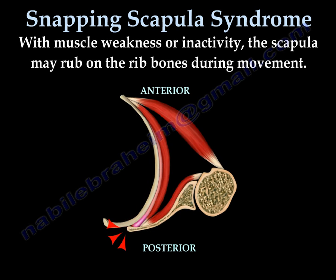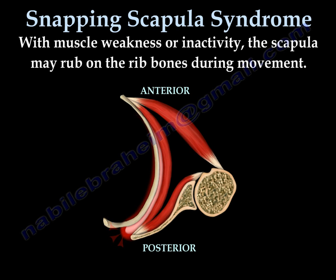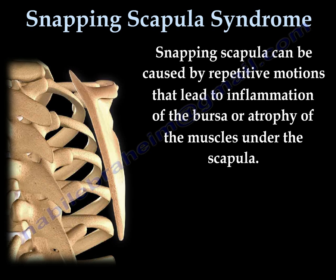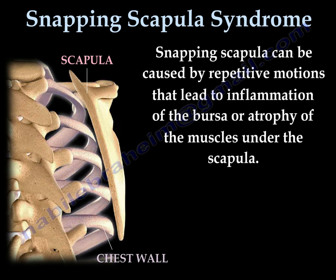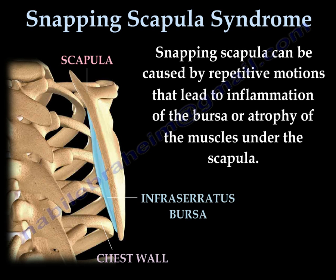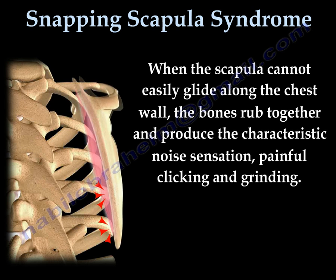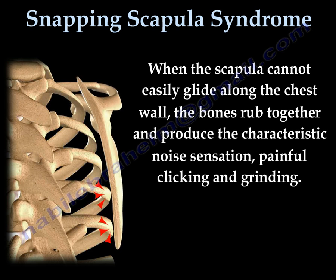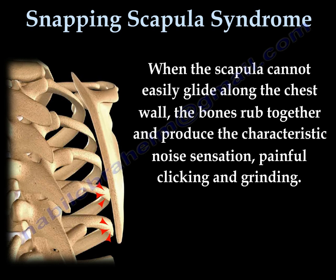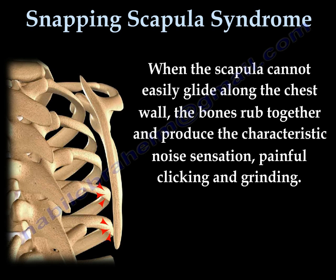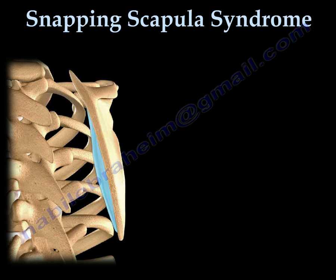When the muscles are weak or inactive, the scapula will rub on the ribs, causing the grinding and clicking movement. Snapping scapula can be caused by repetitive movement that leads to inflammation of the bursa or atrophy of the muscle under the scapula. When the scapula cannot easily glide along the chest wall, the bones rub together and produce a characteristic noise, sensation, and painful clicking and grinding.